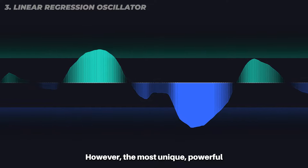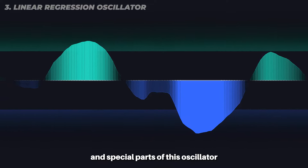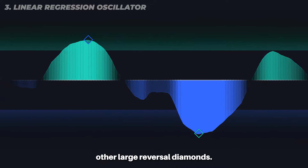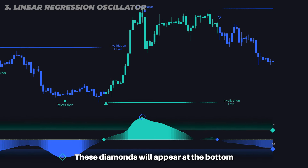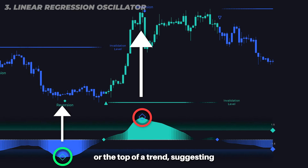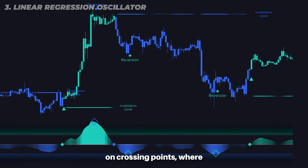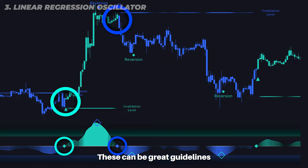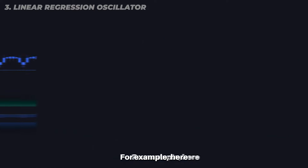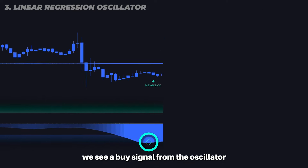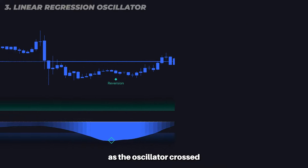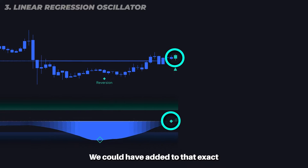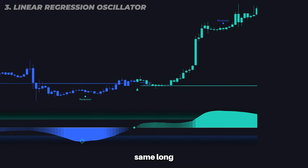However, the most unique, powerful, and special parts of this oscillator are the large reversal diamonds. These diamonds will appear at the bottom or the top of a trend suggesting it's time to exit a position. Smaller diamonds are also provided on crossing points where a new trend has been confirmed — these can be great guidelines for adding to positions. For example, here we see a buy signal from the oscillator and therefore we could have taken a long position. As the oscillator crossed and produced a smaller diamond, we could have added to that exact same long.